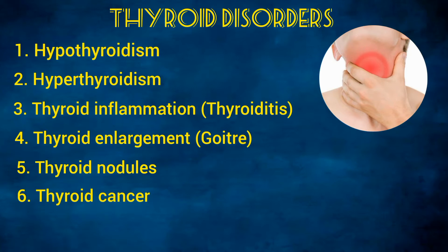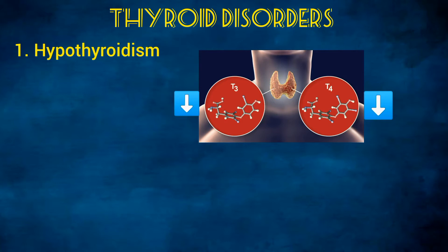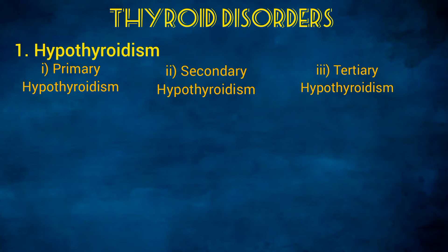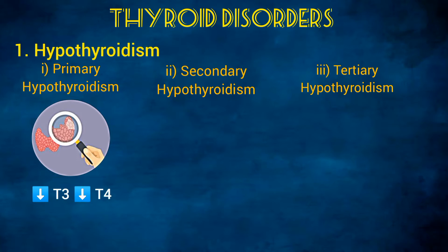Let's start with hypothyroidism. It is an abnormality in which there are insufficient levels of thyroid hormones in the blood. Depending on the causes, it can be divided into primary, secondary, and tertiary hypothyroidism. When the abnormality is in the thyroid gland itself and it is not producing enough hormone, it is known as primary hypothyroidism.